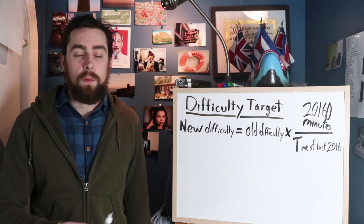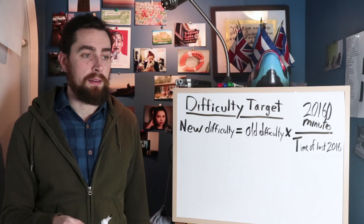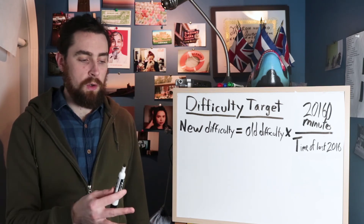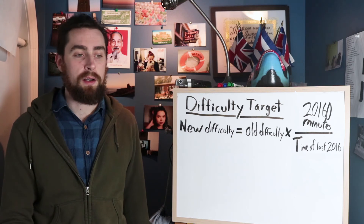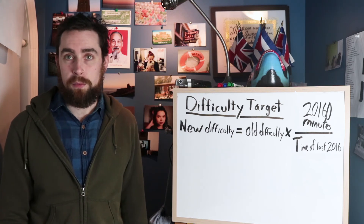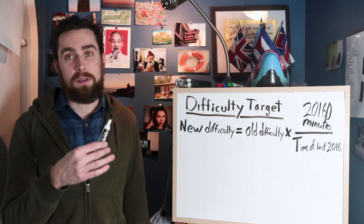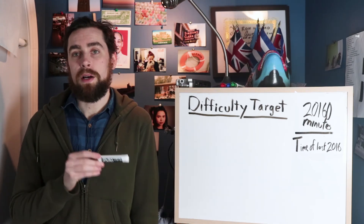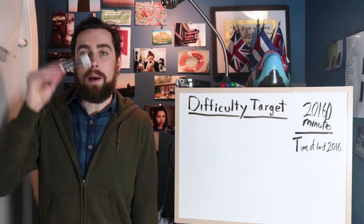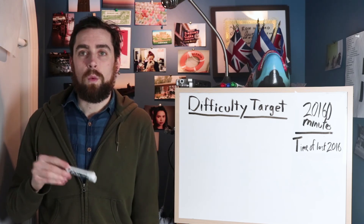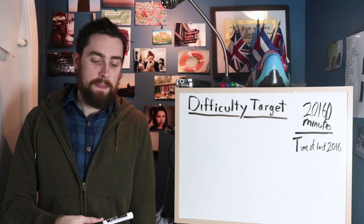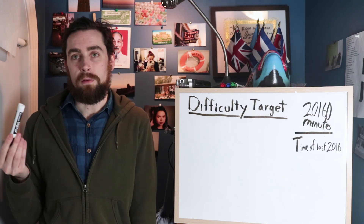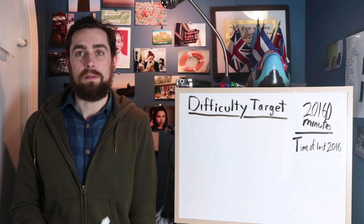Without this difficulty retargeting and adjustment, the block time would just get shorter and shorter as more miners joined the network and more computing power was put towards mining Bitcoin — the puzzle would just get solved quicker and quicker. There is a limit to how much the difficulty can go up and down when retargeting occurs: it can't go up by more than a factor of four, and it can't go down by more than 25 percent.